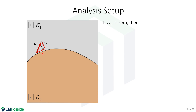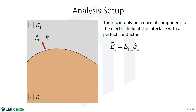Since the electric field is zero inside the conductor and the tangential component of E must be continuous across the interface, the tangential component of E in medium one must also be zero at the interface. While we can't make a conclusion about the normal component from this, the field in medium one can only have a normal component at the surface — all electric field lines terminate perpendicular to the conductor.